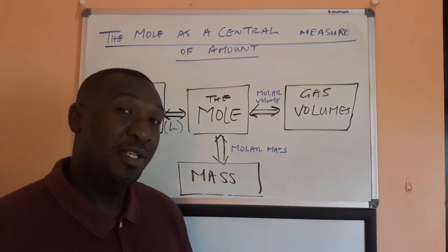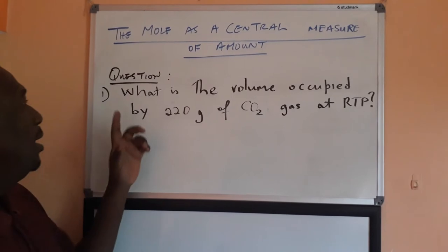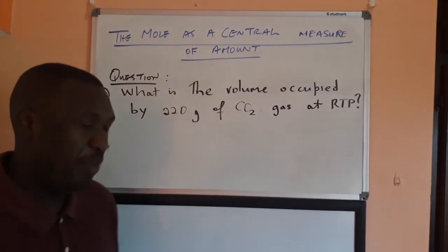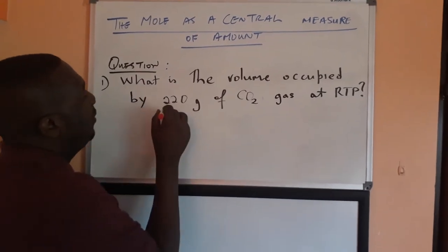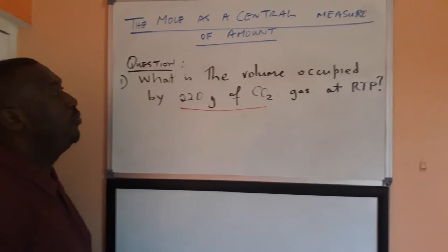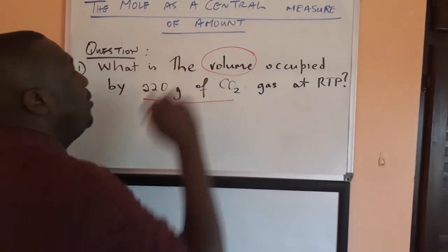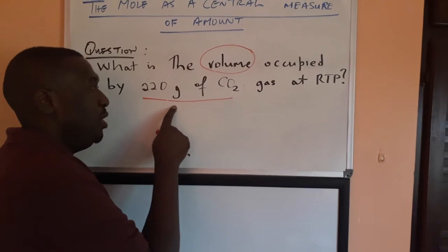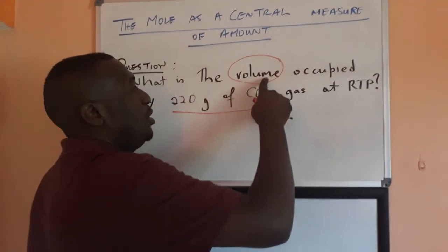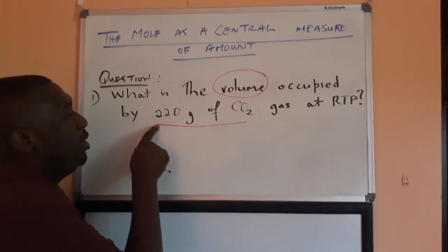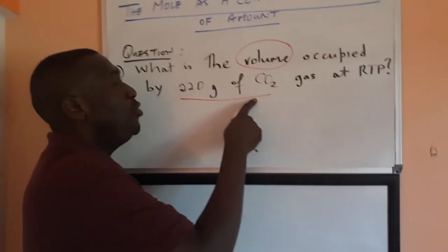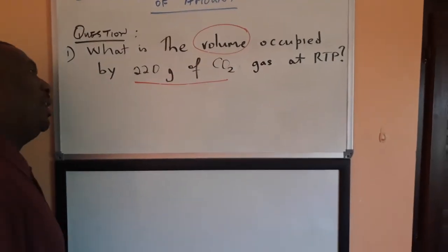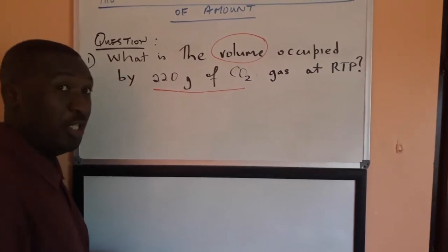Now we're going to practice this in a couple of calculations. The question says: what is the volume occupied by 220 grams of CO2 at RTP? We're given 220 grams of CO2, and the question asks about the volume. We don't have a direct relationship between the two, but mass of CO2 is related to moles, and moles is related to volume. So we convert this mass to the number of moles first, and then use the relationship between moles and volume to calculate the volume of CO2.